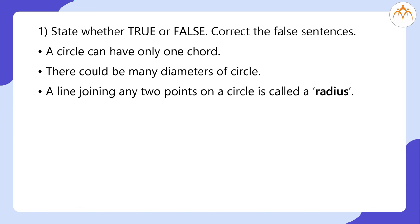State whether TRUE or FALSE. Correct the false sentences. A circle can have only one chord. There could be many diameters of a circle. A line joining any two points on a circle is called a radius.